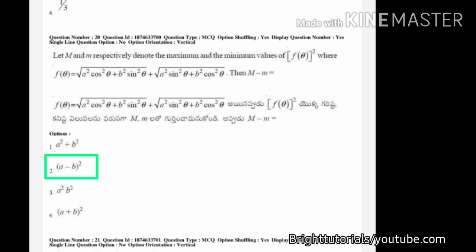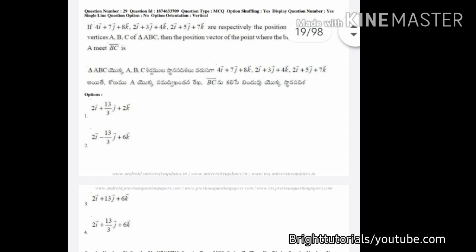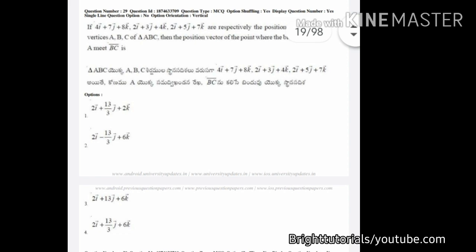At the end of this video I will provide the answer key for these questions — if you have any doubt you can cross-check. In this next question, you can see that option two and option four are the same. The only difference is here it is given as minus 13/3 and in option four it is given as plus 13/3. You can directly eliminate option one and option three and choose any one option between two and four. The correct answer here is option number four.